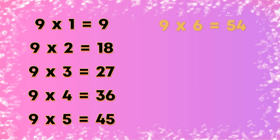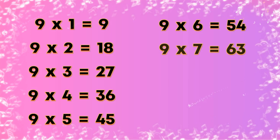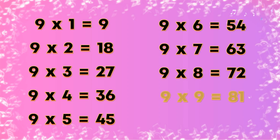Table of 9: 9×1=9, 9×2=18, 9×3=27, 9×4=36, 9×5=45, 9×6=54, 9×7=63, 9×8=72, 9×9=81, 9×10=90.